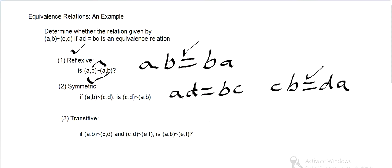And then finally, is it transitive? If AD equals BC and CF equals DE, then is, let's make a question mark, we need to verify this. Is AF equal to BE?